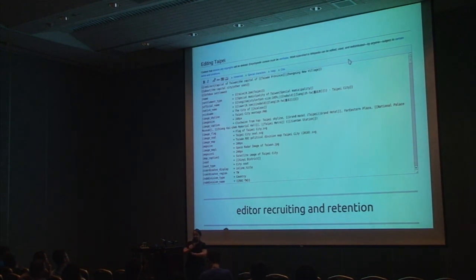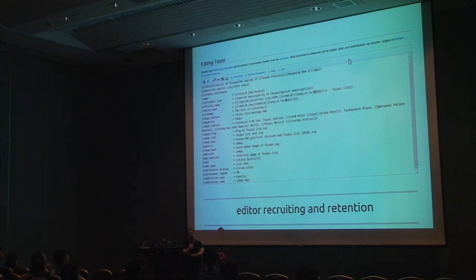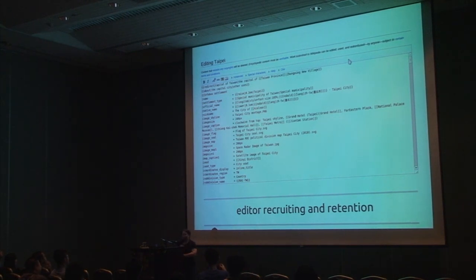The next problem is editor retention and recruiting. This is what you see when you edit the article on Type A in the English language Wikipedia. No one really likes this, I believe. And if anyone is going to tell me that this is really easy, I will have a beer with them.